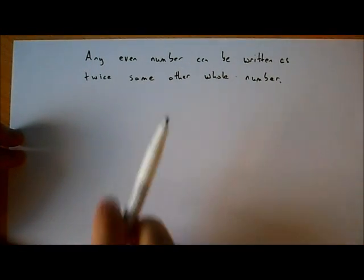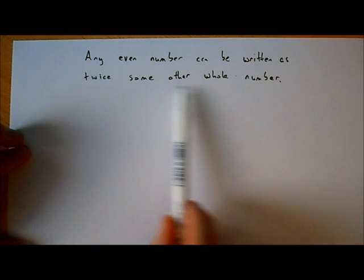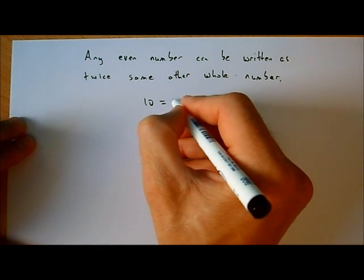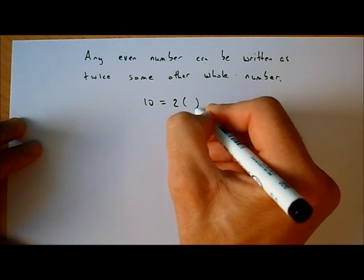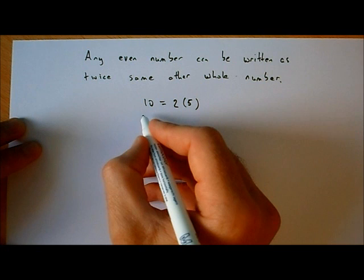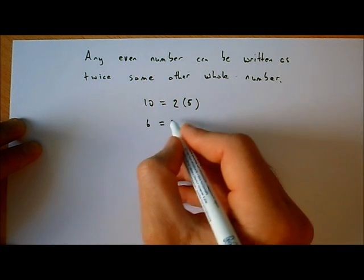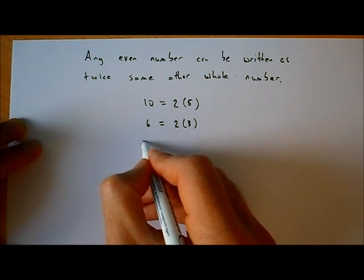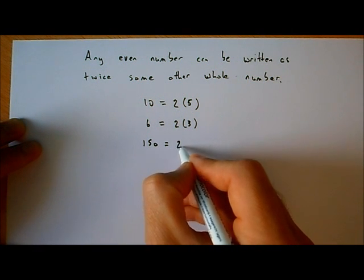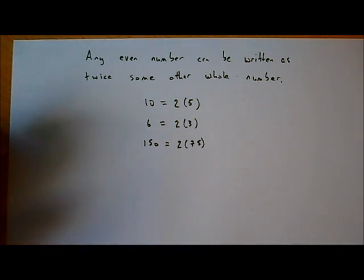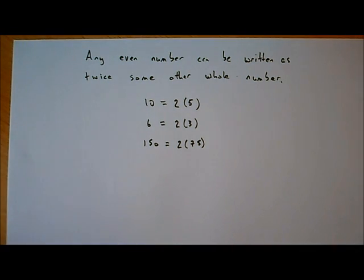The first important idea is that any even number can be written as twice some other whole number. For example, 10 is equal to twice 5. If I take 6, which is an even number, I can write 6 as twice 3. And 150 can be written as twice 75. So any even number can be written as twice some other whole number, and we're going to use that in the proof.